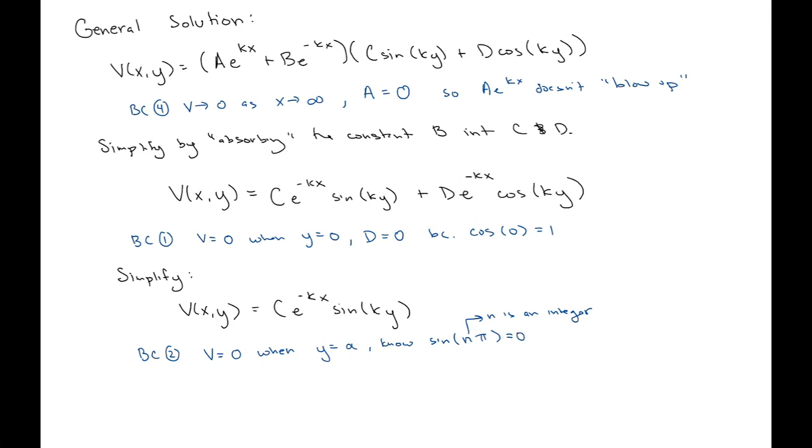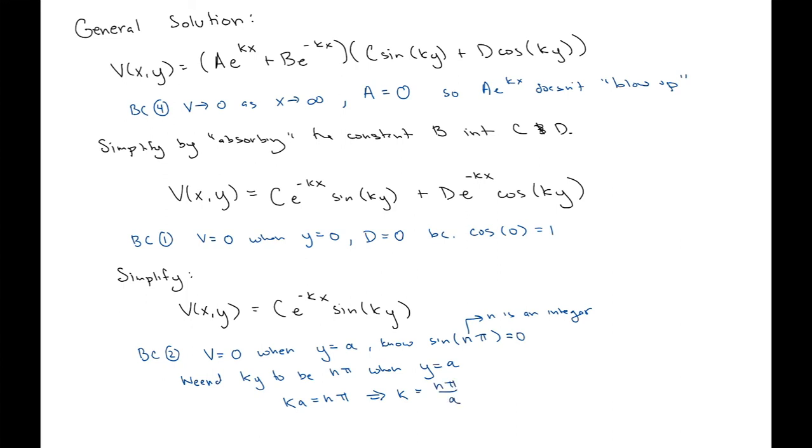So, based on that, I know that I need my k times y to be equal to some n pi when y is equal to a. So, I can say that k times a should be equal to n times pi, and that gives me that k is equal to n pi over a. So, now that gives me a new potential function. We'll write it down one more time. I still have this constant C out front, but now I know what k is. It's got to be n pi divided by a. That allows this function to go to zero when y is equal to a.